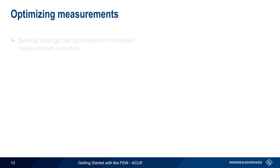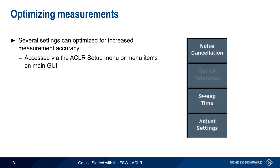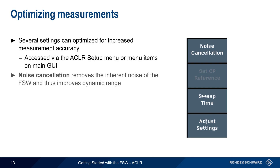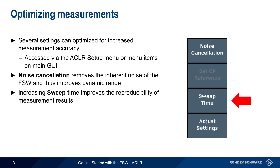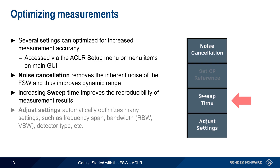In addition to the settings we just looked at, there are additional settings that can be optimized for increased measurement accuracy. These can be accessed via the main GUI or from the ACLR Setup menu. Enabling noise cancellation removes the inherent noise of the FSW and improves dynamic range. Sweep time can be increased to improve the reproducibility of the measurement results, but this will also increase the overall measurement time. The most important of these is Adjust Settings — pressing it will automatically optimize settings such as span, resolution bandwidth, etc., for optimal measurement speed and accuracy.